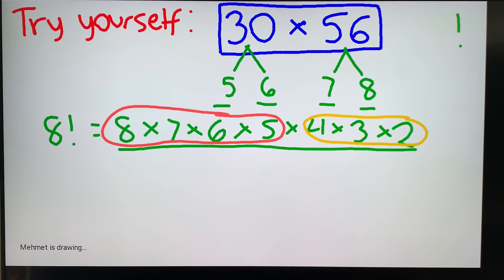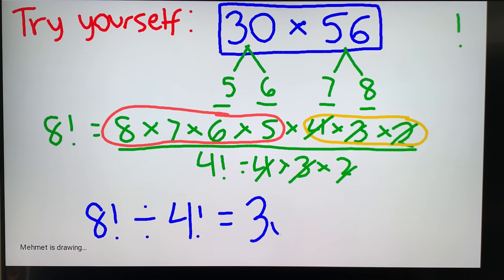So what we can do here is divide by 4 factorial, which is equal to 4 times 3 times 2. And what happens here is the 4 cancels out, the 3's cancel out, the 2's cancel out. So your solution, your final solution for this, would be 8 factorial divided by 4 factorial is equal to 30 times 56.